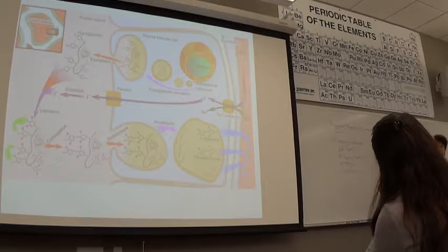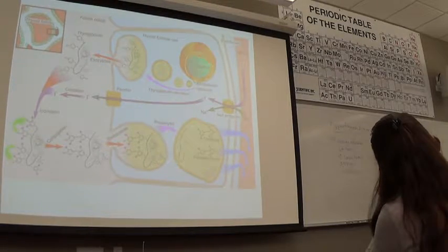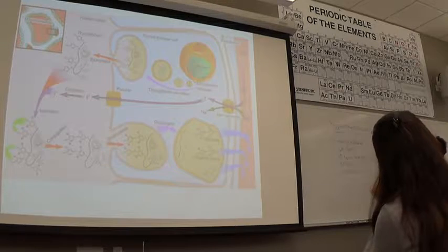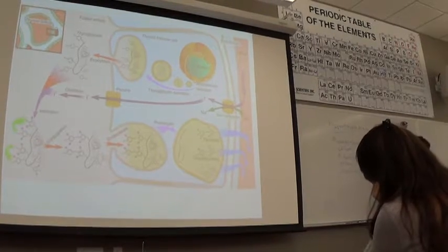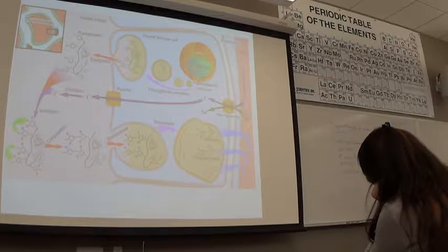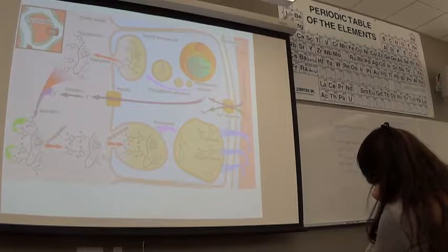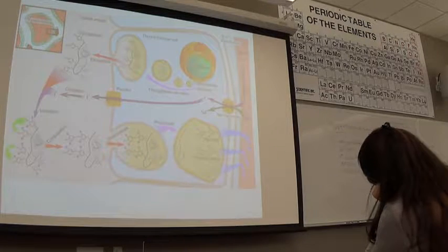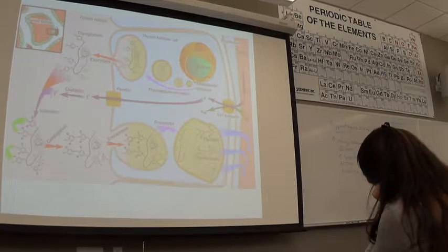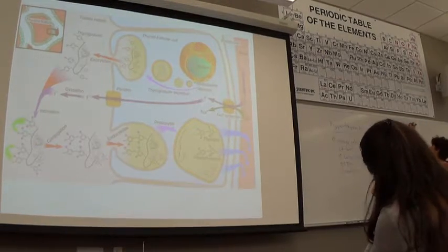If this occurs in an infant, permanent mental retardation in effect can occur. And it's called cretinism. Because so much of brain development and neural development still has to occur after an infant is born. They're not completely mature mentally in their neural formation and myelination. If this occurs in infants.